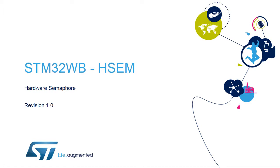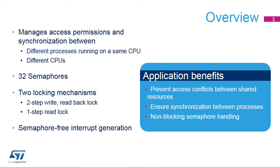Hello, and welcome to this presentation of the STM32 Hardware Semaphore, or HSEM, module. It covers the main features of the module, which is used to manage the access permissions and synchronization of resources shared between multiple processes. The HSEM module, integrated inside STM32 microcontrollers, provides semaphores used to synchronize processes and manage access permissions for shared resources. This module provides a two-step lock mechanism and a fast one-step lock mechanism. Applications benefit from process synchronization and shareable resources via non-blocking interrupt-based semaphores.